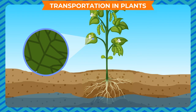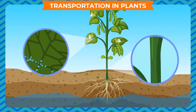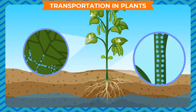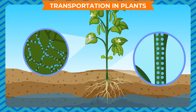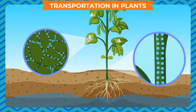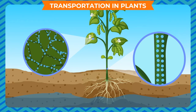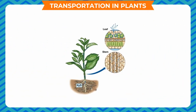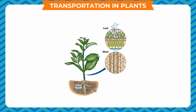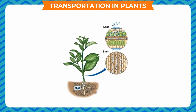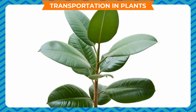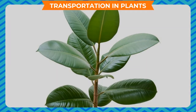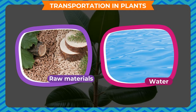Xylem takes water and minerals to the leaf, running through the stem. This process is continuous because the loss of water from the plant by the process of transpiration is also continuous. Due to the loss of water by transpiration, pressure is always created upwards, which leads to the sucking up of raw materials and water.